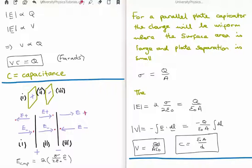So for a parallel plate capacitor, the charge will be uniform where the surface area is large and the plate separation, which I call d, is small.